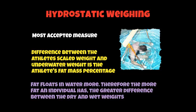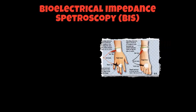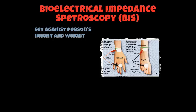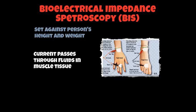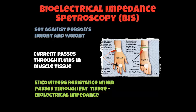There are some clips on YouTube so please access those to see it for yourself. The next method is called Bioelectrical Impedance Spectroscopy, or BIS for short. You input your height and weight into an electronic device, and then electrodes are placed on your feet and hands, as shown in the picture. A current passes through your body — in particular the fluids within your muscle tissue — between the electrodes on your hands and feet. When this current encounters resistance passing through fat tissue, this is called your bioelectrical impedance. This resistance is recorded by an electronic monitor, which then calculates your body fat percentage.